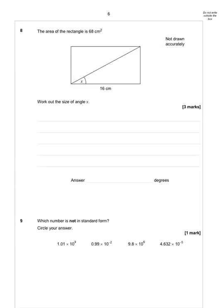Question 8. The area of the rectangle is 68 cm squared. We know the base, and we need to find the size of an angle.